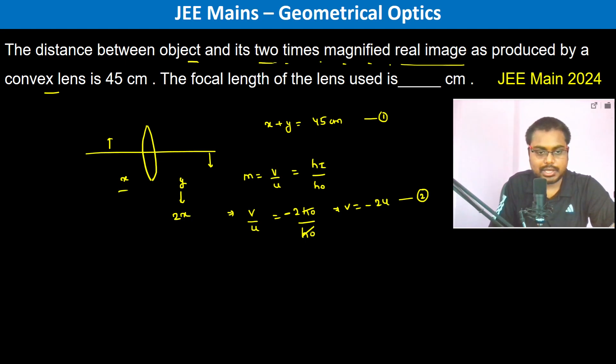X plus 2X, that is 3X, is equal to 45 centimeters. Therefore, X is equal to 15 centimeters and Y becomes 30 centimeters. So now we can use this formula: 1 by V minus 1 by U is equal to 1 by F.